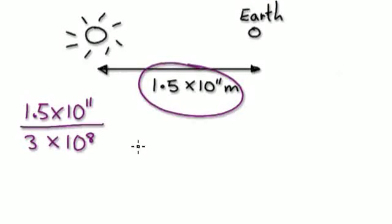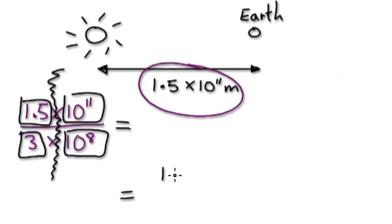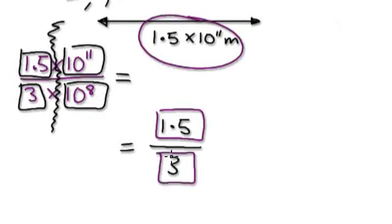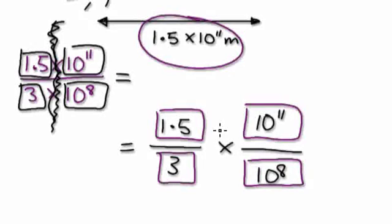Now we're going to split this up. At the moment we've got 1.5 times 10 to the power of 11 on top, and 3 times 10 to the power of 8 on the bottom. We can split this fraction into two separate blocks: 1.5 over 3, multiplied by 10 to the power of 11 over 10 to the power of 8. The reason we do this is because each of those parts is really easy to calculate.